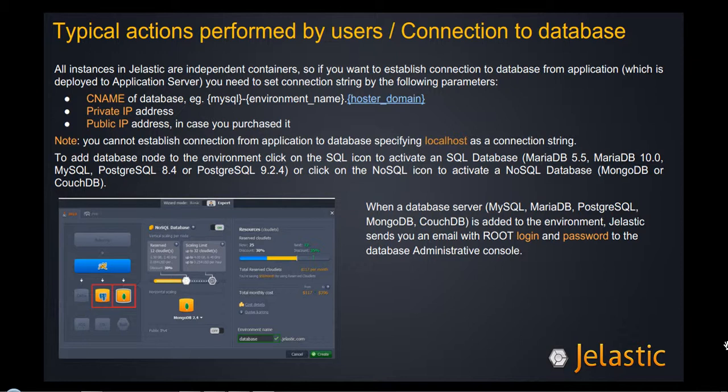As you know, the main difference in comparison with local deployment and deployment in Elastic is that the application server and database server are located not on the same host, so it's not possible to get a connection established by means of setting a localhost string or 127.0.0.1 IP address.